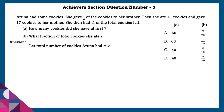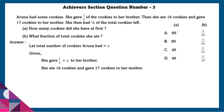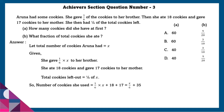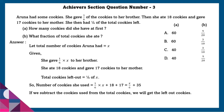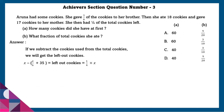Let the number of cookies Aruna had be X. Given: she gave 1/6 of X to her brother, ate 18 cookies, and gave 17 to her mother. Total cookies left is equal to 1/4 of X. Number of cookies used is equal to X/6 plus 18 plus 17, which equals X/6 plus 35. If we subtract the cookies used from total cookies we get the left-out cookies. That is X minus (X/6 plus 35) equals 1/4 of X.